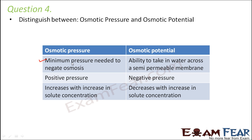Osmotic pressure increases with an increase in solute concentration, whereas osmotic potential decreases with an increase in solute concentration. When solute concentration increases, more and more water flows into that region — that tendency represents osmotic potential. Applying a positive pressure stops osmosis — that is osmotic pressure. So osmotic pressure opposes osmosis while osmotic potential favors it.